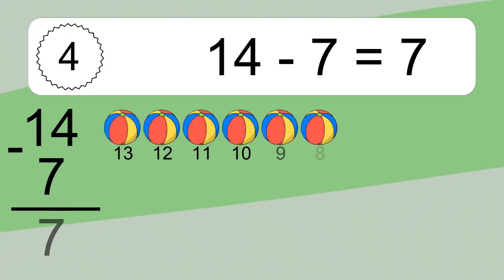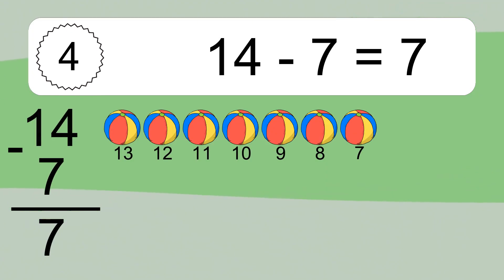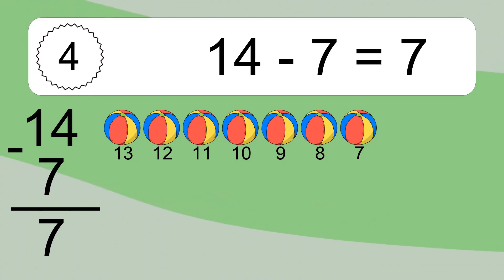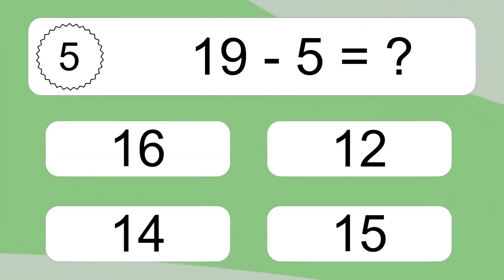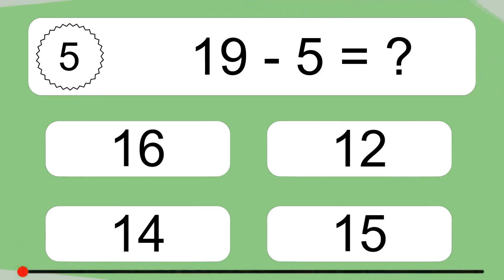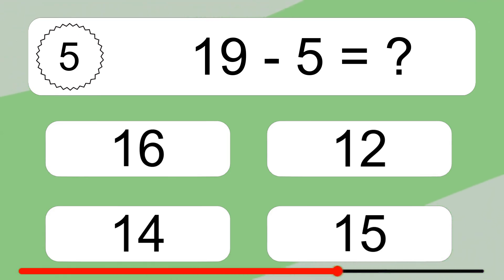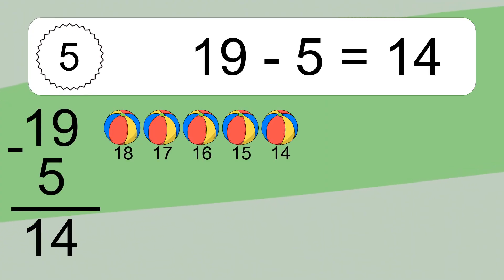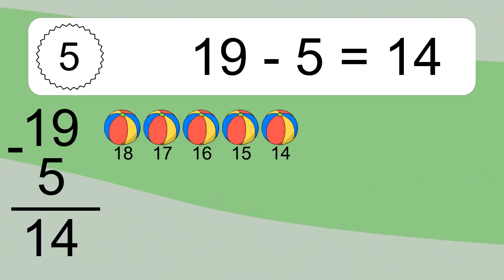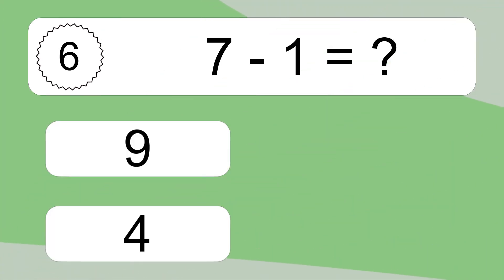14 minus 7 equals 7. Let's count it: 13, 12, 11, 10, 9, 8, 7. 19 minus 5 equals what? 19 minus 5 equals 14. Let's count it: 18, 17, 16, 15, 14. 7 minus 1 equals what?